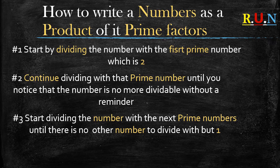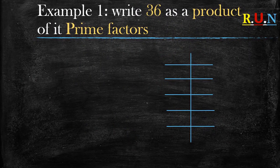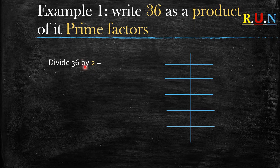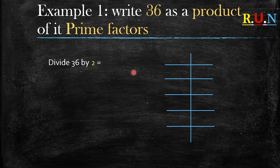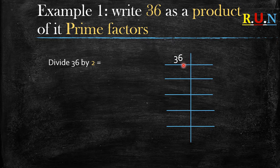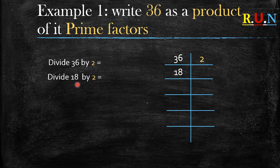Example number one: write 36 as a product of its prime factors. I would advise you to have a drawing like this one, as it makes it easier. We start by dividing 36 by 2 — because 2 is the first prime number. We write 36 on the left side and 2 on the right hand side. So 36 divided by 2 equals 18.